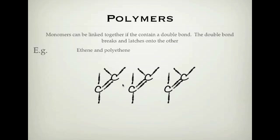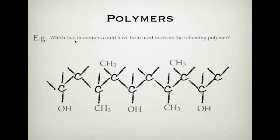An important thing to note: you need to show that the double bond joins on to the carbon where the original double bond was. If you have a chain longer than two carbons, it doesn't join on to either end of the chain — it joins on to where the double bond is in that chain. Let's look at another example where we are going from a polymer and working out what the monomer actually is. Here is a polymer with a long chain of carbons.